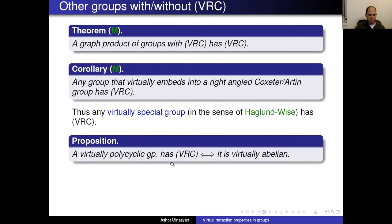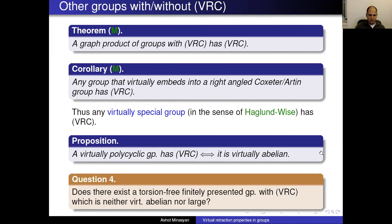For polycyclic groups, the result is analogous: a polycyclic group has VRC if and only if it is virtually abelian. An open question about VRC: does there exist a torsion-free finitely presented group with VRC that is neither virtually abelian nor large? This is related to the virtual Betti number question — does there exist a finitely presented group with infinite first virtual Betti number which is not large?